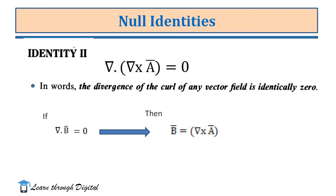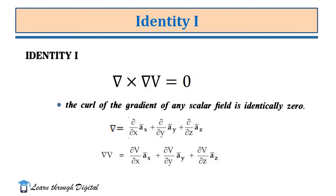We will prove these identities step by step. First, I consider Identity 1: del cross del V is equal to 0, that is, curl of the gradient of any scalar is equal to 0. We know that the del operator can be represented in a Cartesian coordinate system as del equals dou/dou x ax-vector plus dou/dou y ay-vector plus dou/dou z az-vector. From this, the gradient of a scalar is del V, which equals dou V/dou x ax-vector plus dou V/dou y ay-vector plus dou V/dou z az-vector.